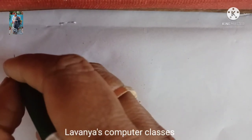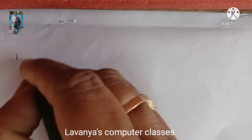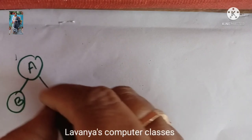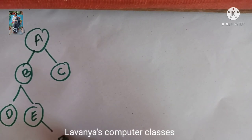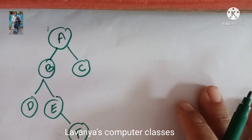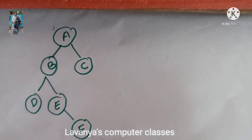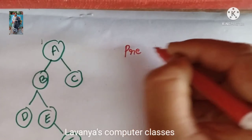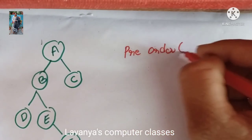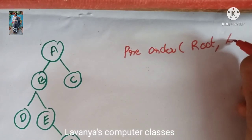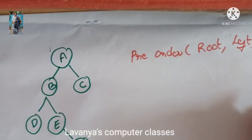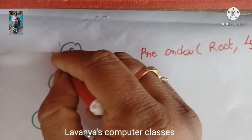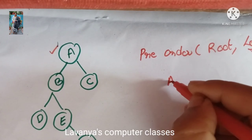Now I will explain pre-order traversal with an example. I take a graph with nodes A, B, C, D, E, and F. Pre-order technique: first root, then left, then right. So starting from the graph, the root node is A — write A first.